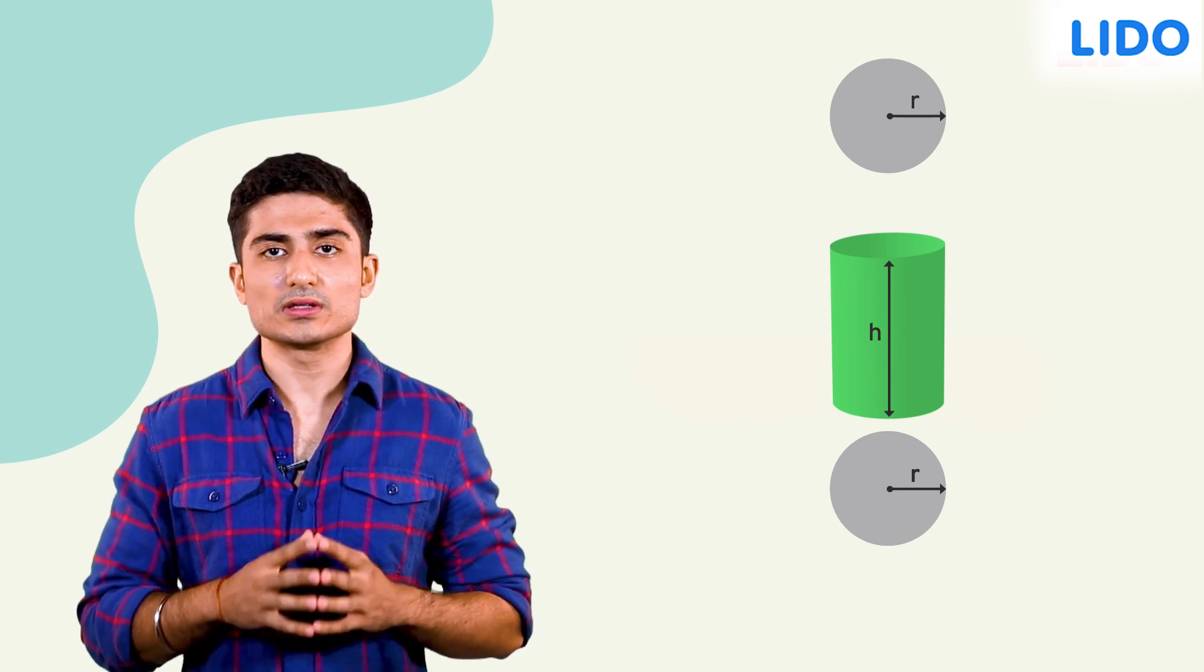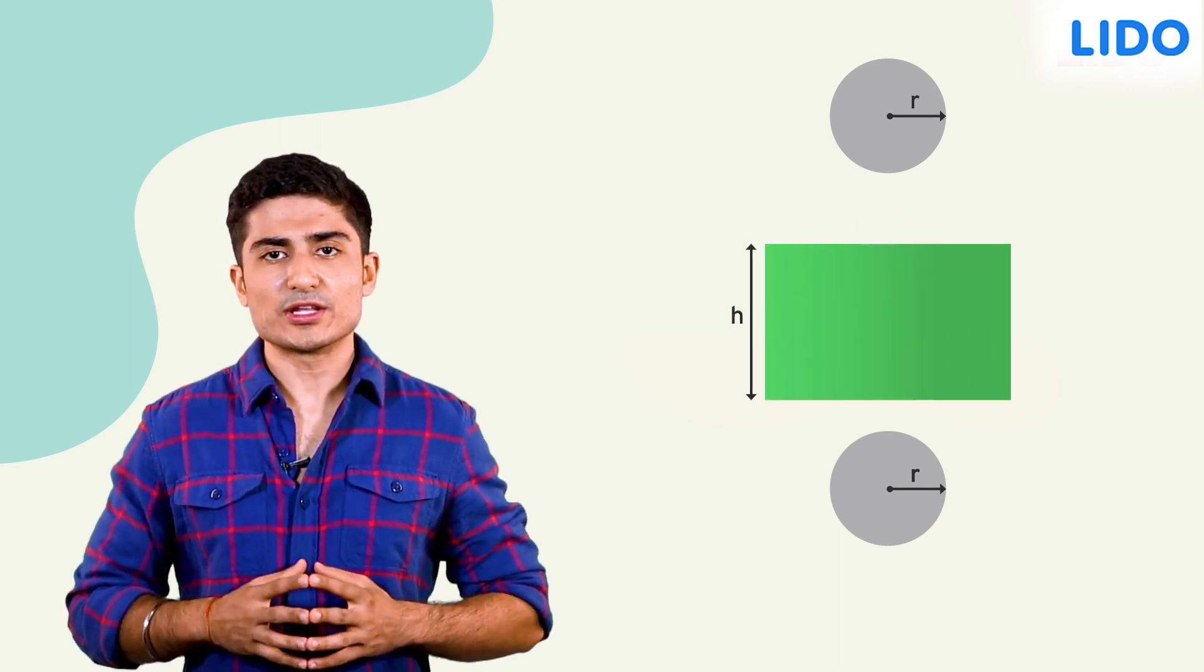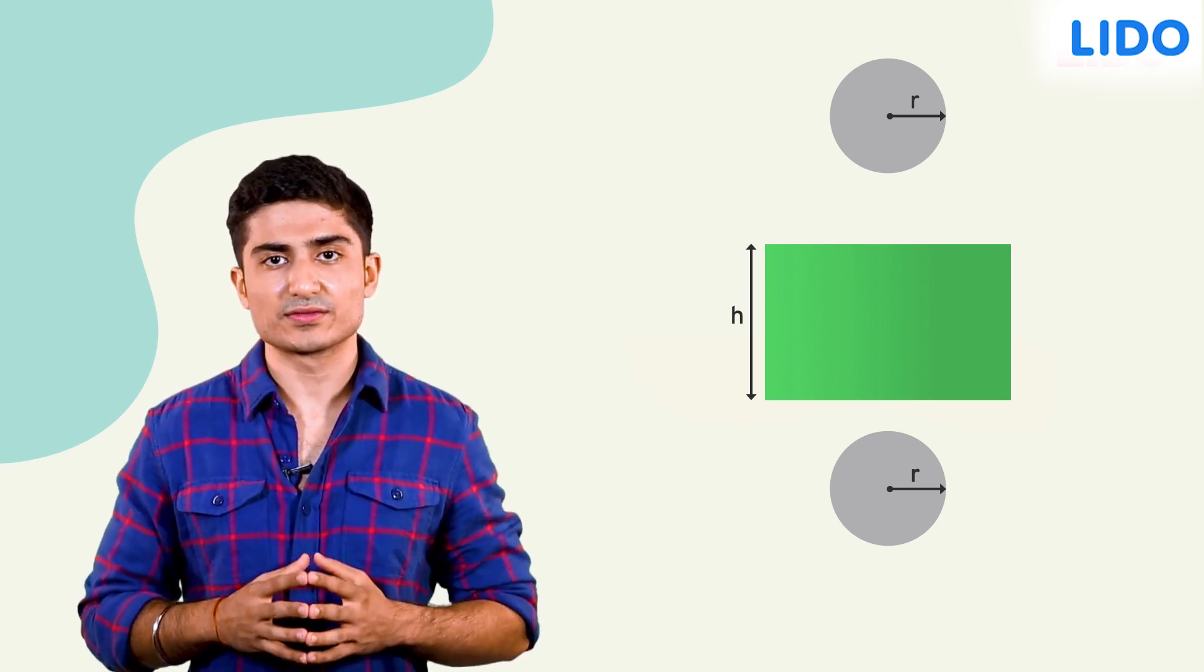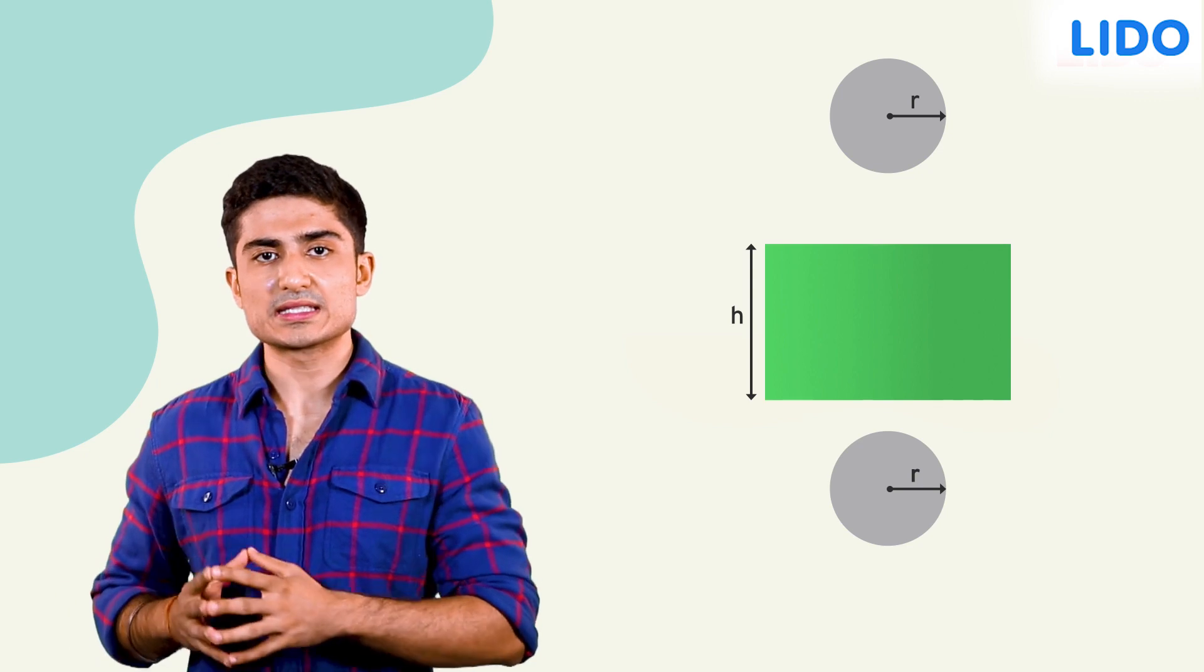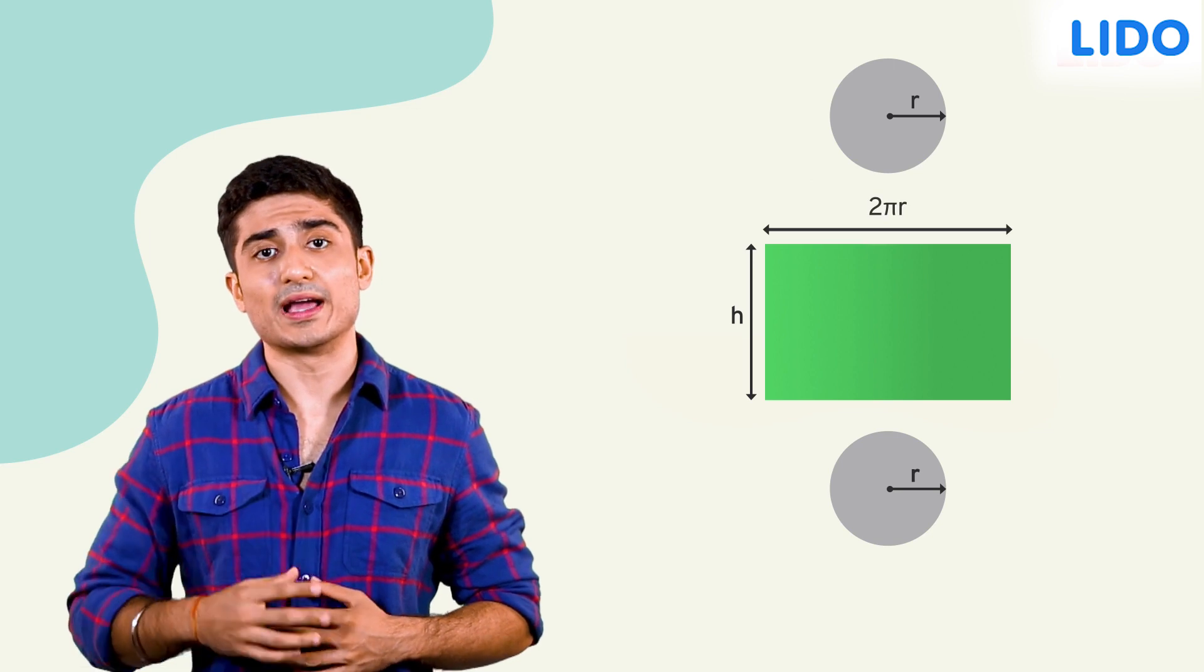If we cut the curved surface along the height and flatten it out, we get a rectangle. What are the dimensions of this rectangle? The measure of one side is h which is the height of the cylinder. The measure of the other side is the circumference of the top or bottom circles which is 2πr.